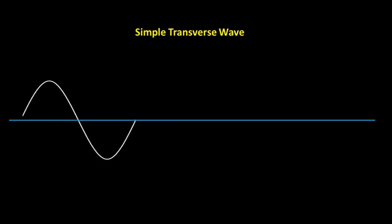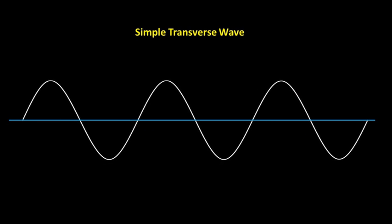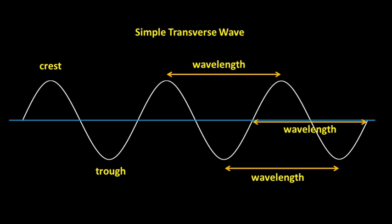We can represent a wave with a simple diagram. We'll use a transverse wave because it's so much easier to picture. Most waves in nature have a positive and a negative component. The top of the wave is called a crest, while the bottom of the wave is called a trough. The wavelength of a wave is the distance from one crest to the next, or from one trough to the next. Wavelength is usually measured in meters. The Greek letter lambda, which is the Greek letter L, is used as the symbol for wavelength.